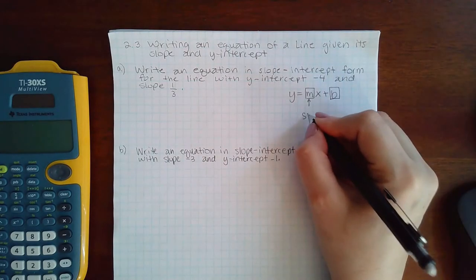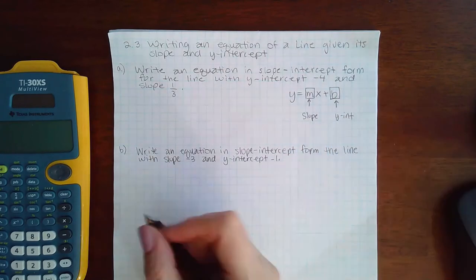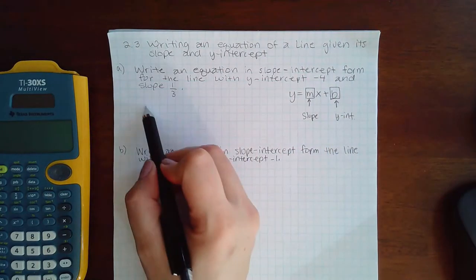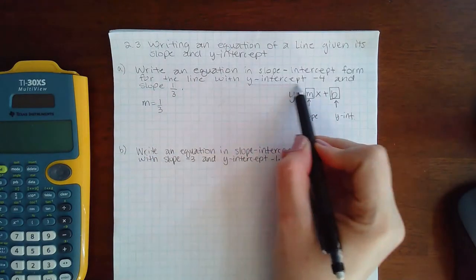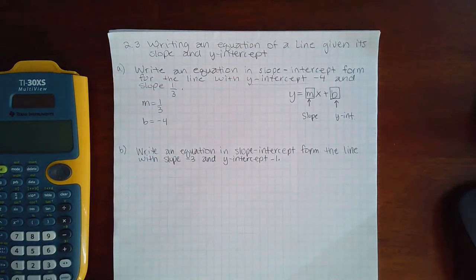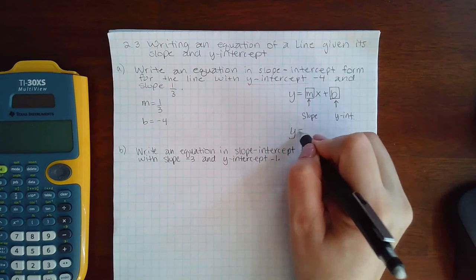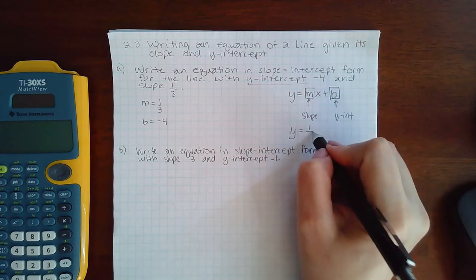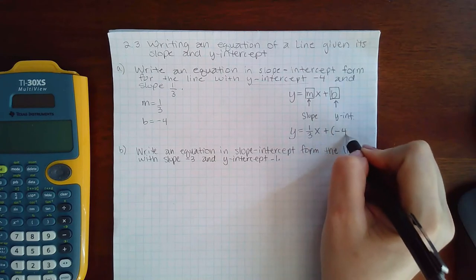So m is the slope and b is the y-intercept. In my problem here they've given me that the slope is one-third and the y-intercept is negative 4. So all I need to do is plug those numbers in the respective places: the one-third will go in front of x plus the negative 4 in for b.